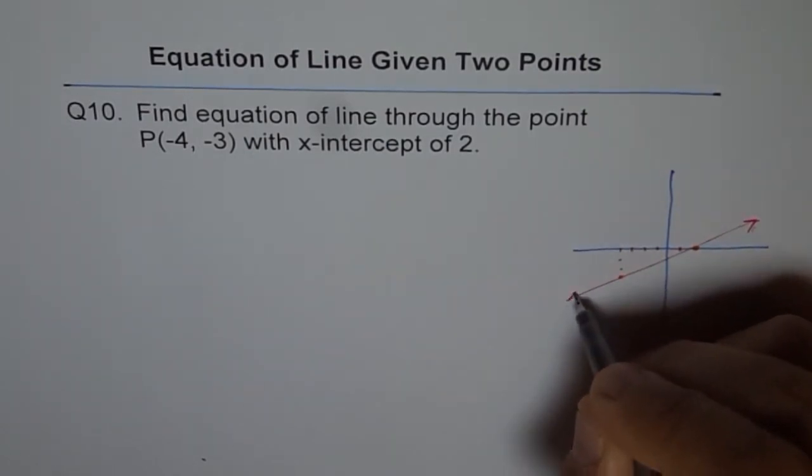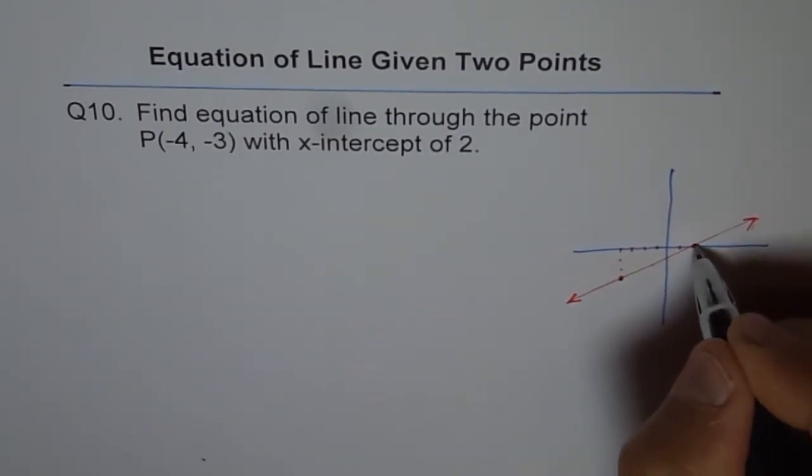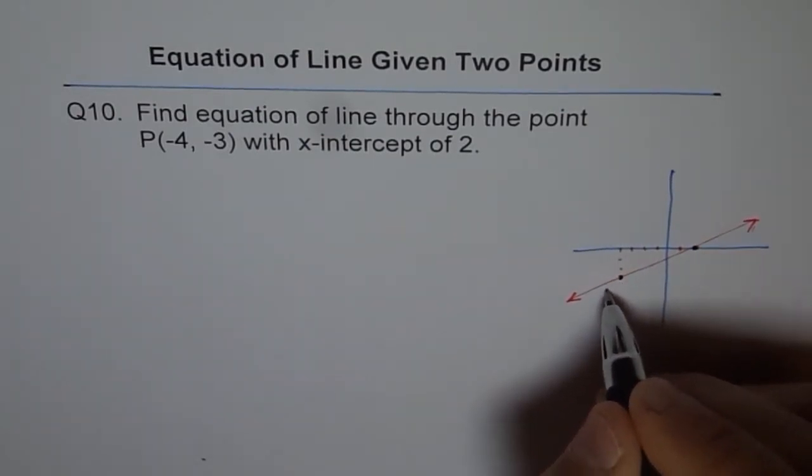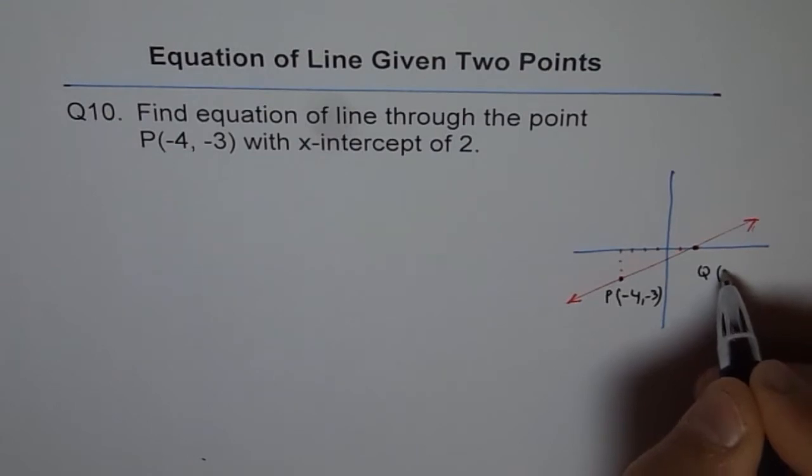Let me clearly write down my points. So this point and this point. So this point for us is P. We say P is (-4, -3).